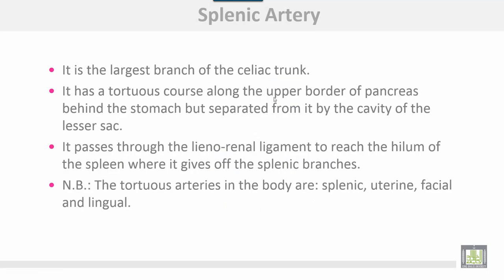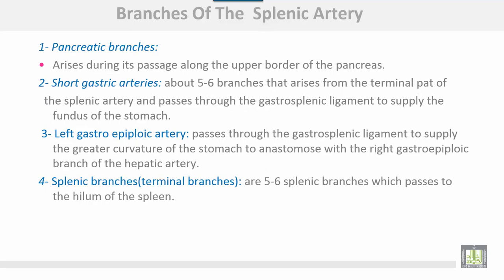The splenic artery is the largest branch of the celiac trunk. It has a tortuous course along the upper border of the pancreas, behind the stomach but separated from it by the cavity of the lesser sac. It passes through the lienorenal ligament to reach the hilum of the spleen, where it gives splenic branches. The tortuous arteries in the body are the splenic, uterine, facial, and lingual arteries.